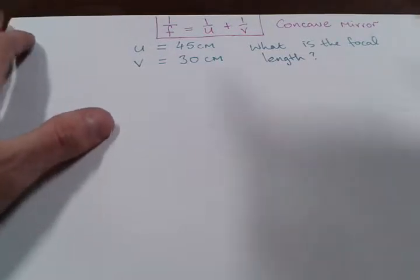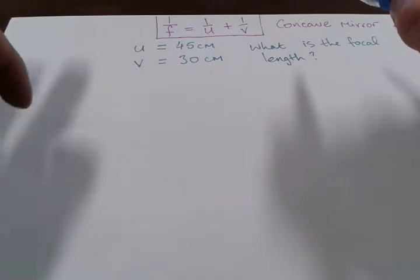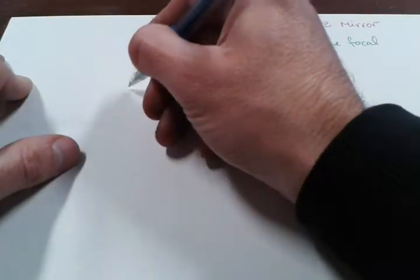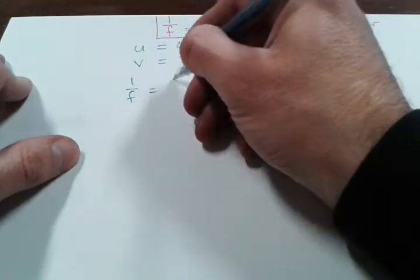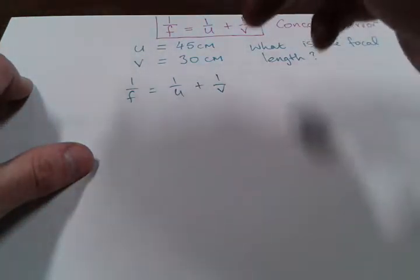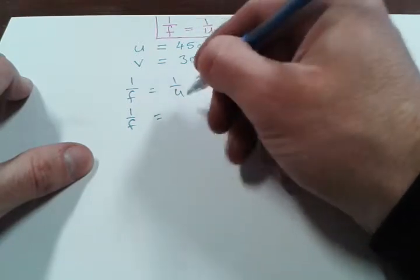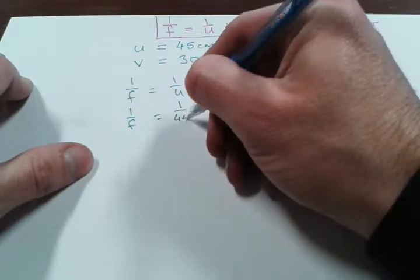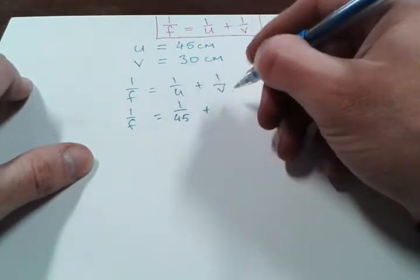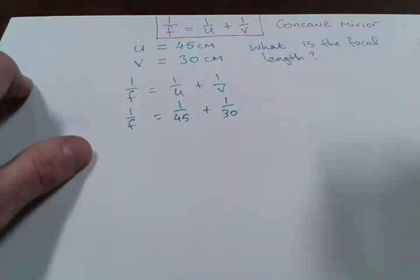So obviously this is based on 1 over F equals 1 over U plus 1 over V. We've been given U and V, so it's a simple task of using the formula. We substitute in our values, so we get 1 over F equals 1 over 45 plus 1 over 30.